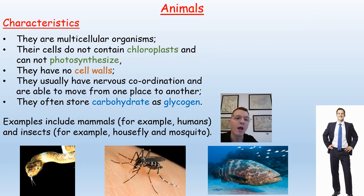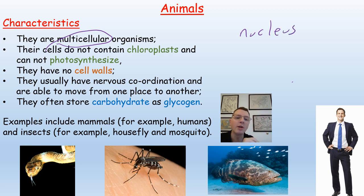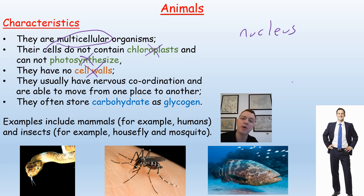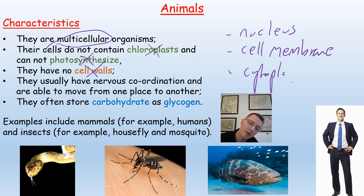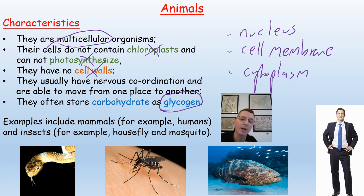Animals are multicellular organisms. They have a nucleus because they are eukaryotic, but they do not contain chloroplasts, cannot photosynthesize, and do not have cell walls. Animal cells therefore only have three parts: the nucleus, the cell membrane, and the cytoplasm where chemical reactions like respiration happen. Animals may have glucose in their cells, but it is used straight away in respiration; if they need to store carbohydrates, they store them as glycogen - just like fungi. Examples include insects, mosquitoes, fish, and jellyfish.